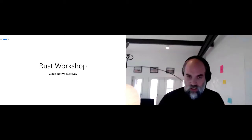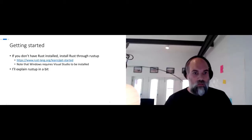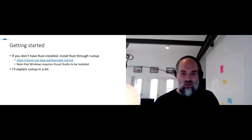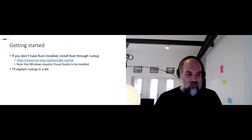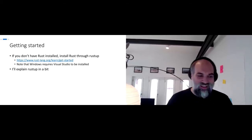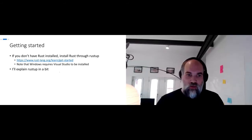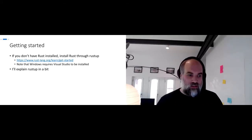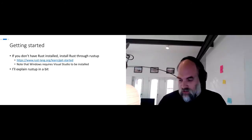This is an introduction to Rust in two hours. Before I even get started introducing myself, if you don't have Rust installed, I highly recommend installing it through rustup. Go to rustlang.org/learn/get-started. The reason I put this slide up front is that if you're on Windows, this requires Visual Studio to be installed, which is a sizable download. If you can't get Rust installed, you can always use the playground at play.rustlang.org to follow along and at least get things to compile.